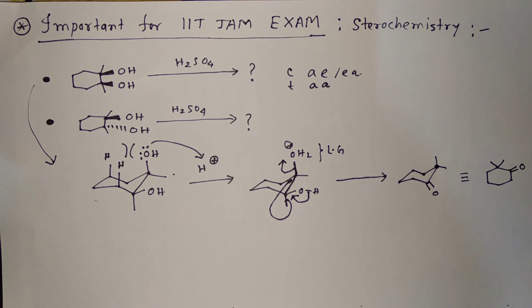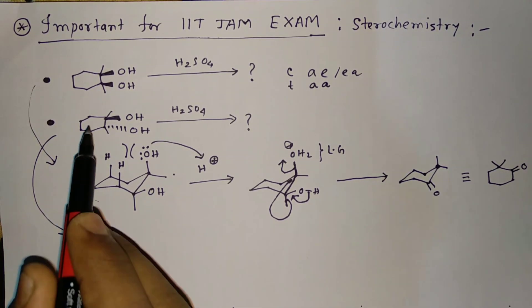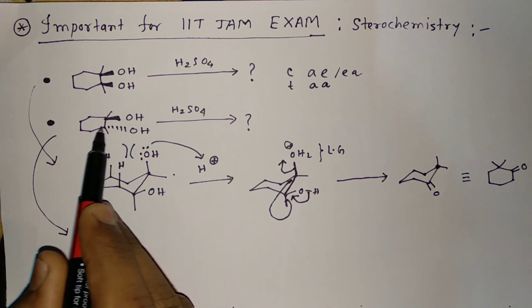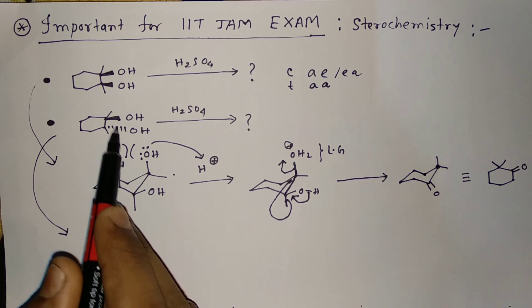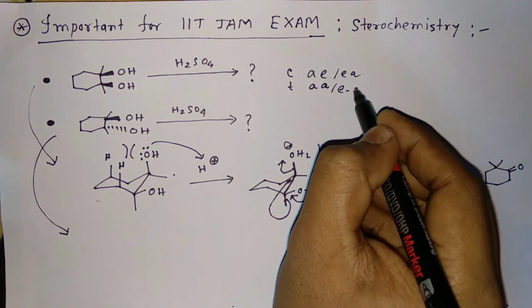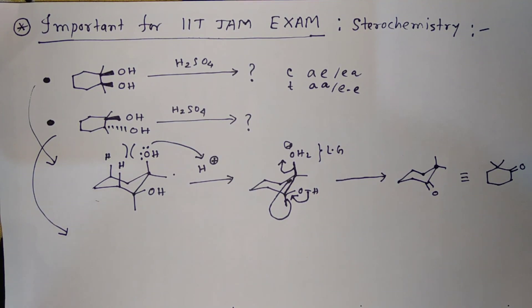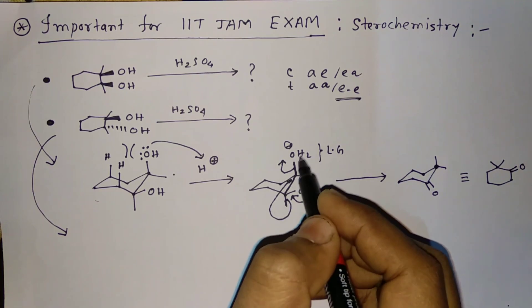Now coming to the second question. This is one OH above and another is below, that is trans - above, below. This is 1,2-trans system. So trans-1,2 means axial-axial or equatorial-equatorial, right? Which one is more stable? Equatorial-equatorial is more stable because axial OH feels repulsion with the axial hydrogens.